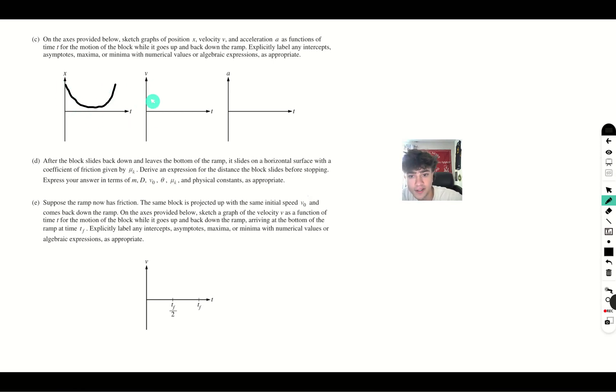Our velocity is linear, and it starts at v0, and then it reaches 0. And then it goes in the opposite direction. So it's just a straight negative line.